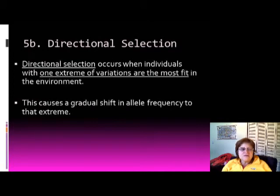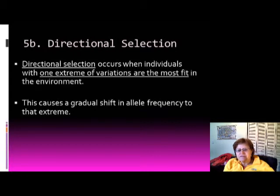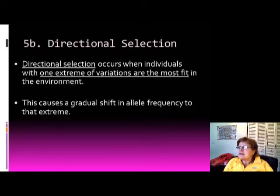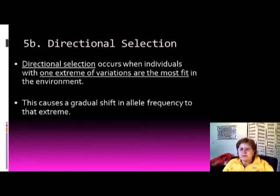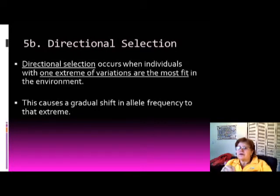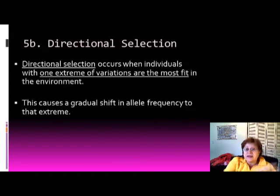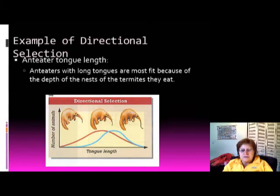Directional selection happens when individuals with one extreme variation are the most fit, causing a gradual shift in allele frequency toward that extreme. A classic example is England during industrialization: dark dust particles covered the environment, so white moths were easily seen and eaten, while darker moths survived — allele frequency shifted toward darker coloration.